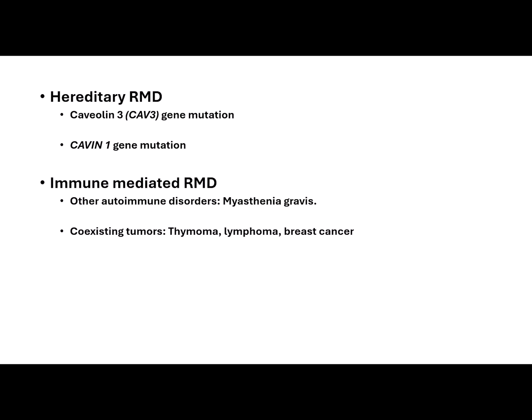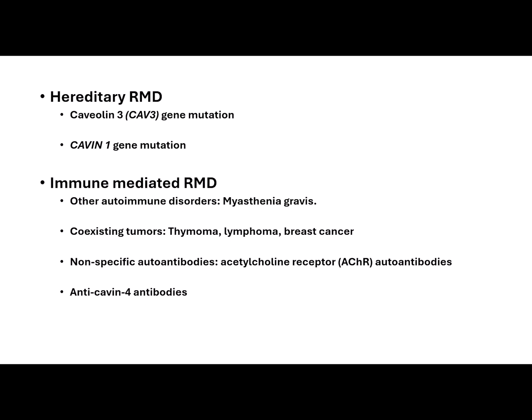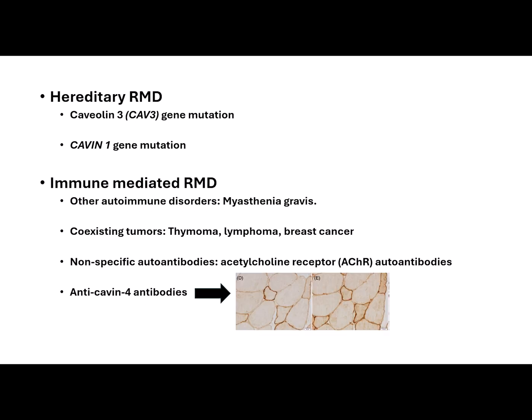A paraneoplastic etiology was suggested after describing cases with coexisting tumors. Several autoantibodies have been reported, most of which are non-specific. These include acetylcholine receptor autoantibodies without associated defect of neuromuscular transmission. Anti-cavin-4 antibodies were proven to be a specific serological marker for immune-mediated rippling muscle disease. This mosaic expression of caveolin-3 and cavin-4 immunoreactivity is the pathological feature of cavin-4-associated immune-mediated rippling muscle disease.